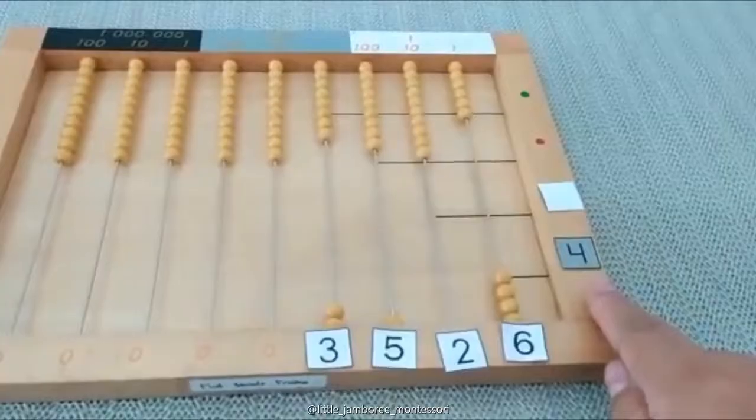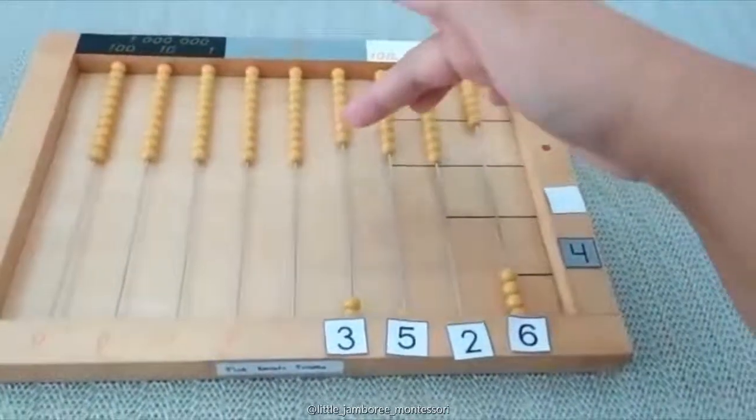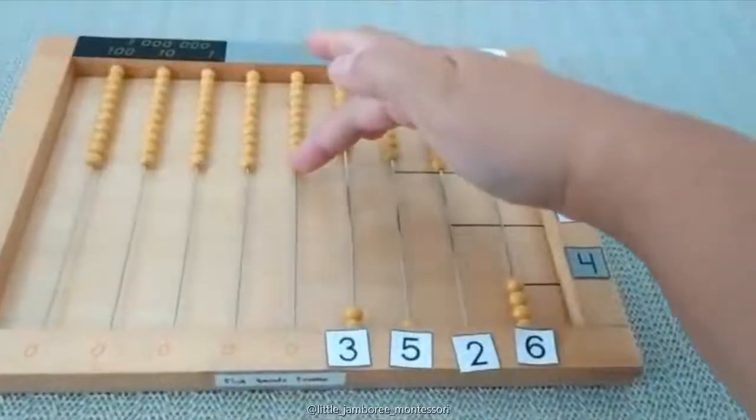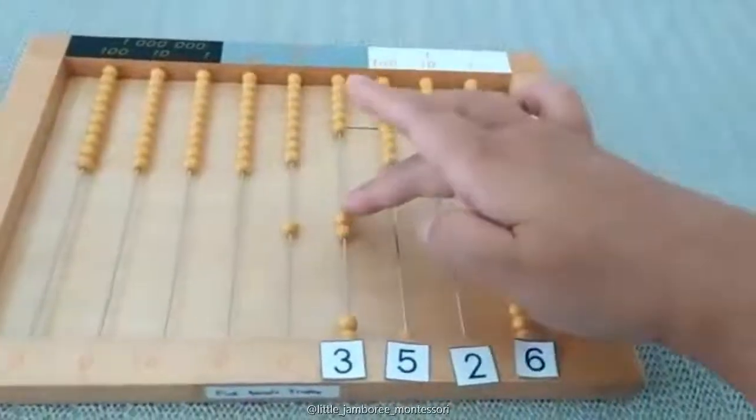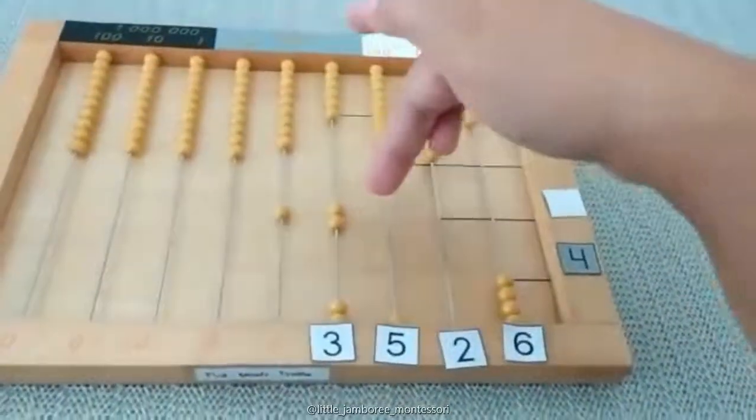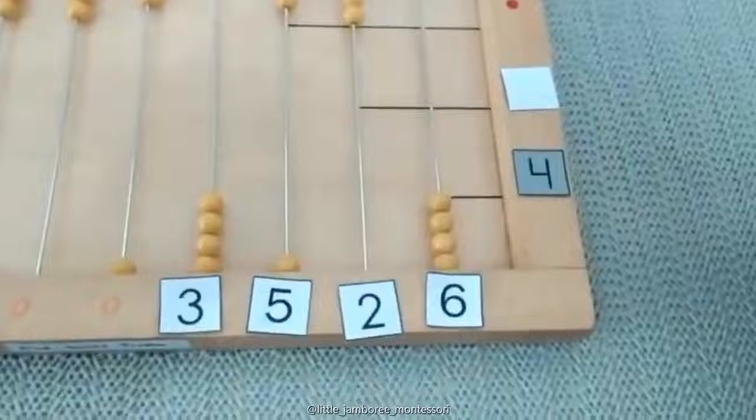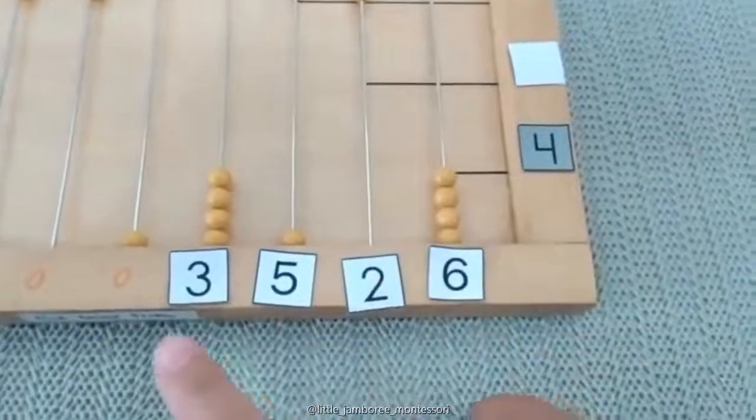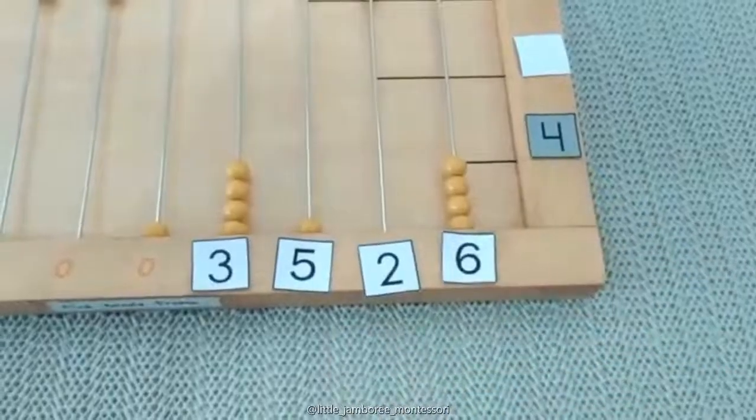The last step: the 3000 multiplied by four equals 12, which is 12,000, meaning one ten thousand and two thousand. So we finish with the first step: 3526 multiplied by four equals...